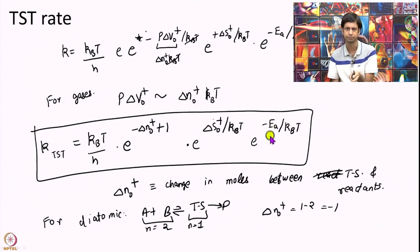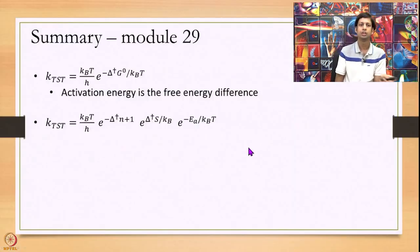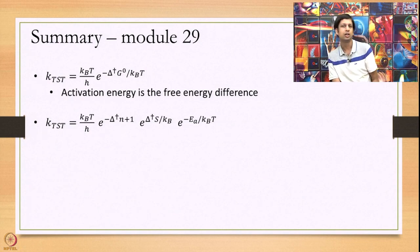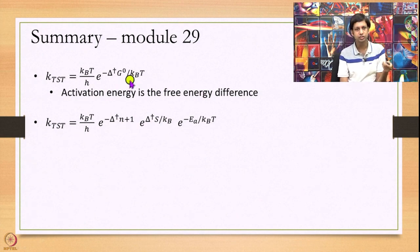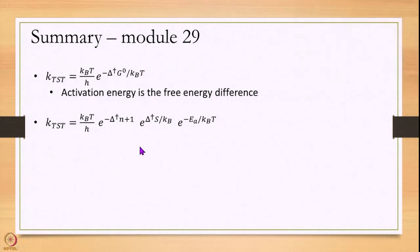So, depending on how many reactants you have, you can calculate this delta N naught. This is usually trivial, delta N naught. The harder part is delta S naught and EA. So, today we have just briefly looked at a thermal formulation of transition state theory and we have looked at two important points. One, that transition state rate is really a free energy difference, the activation energy. And second, we can write transition state rate in the language of thermal quantities: delta S, EA, and delta N. So, next time we will solve a few problems and then move on to molecular dynamics. Thank you very much.